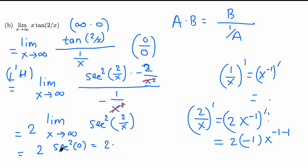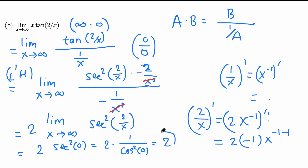We know that secant is the reciprocal of cosine, so sec²(0) = 1/cos²(0). We know cos(0) = 1, so 1² = 1, and 1/1 = 1. Therefore 2 times 1 equals 2, so 2 is the final answer.